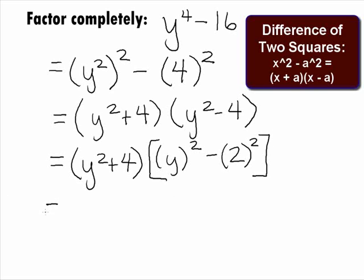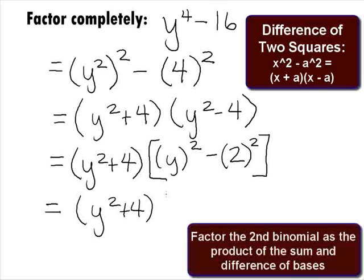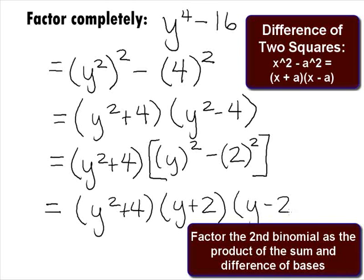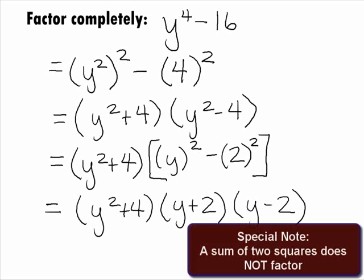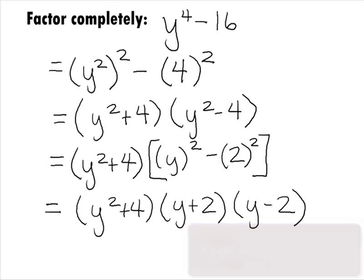The first binomial will remain y squared plus 4, and we can factor the second binomial as a product of the sum and difference of our bases of y and 2, and get y plus 2, times y minus 2. Note that the sum of 2 squares does not factor, so this is factored completely and is our final answer.